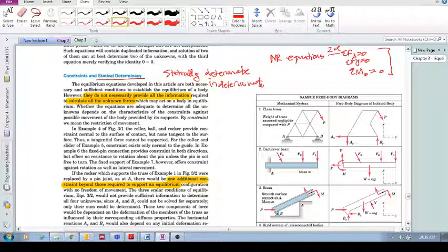If the number of equations that we have are not sufficient to solve the problem, then we have a statically indeterminate system. If the number of equations are sufficient to solve the problem, we have a statically determinate system. So that's just the basic idea.